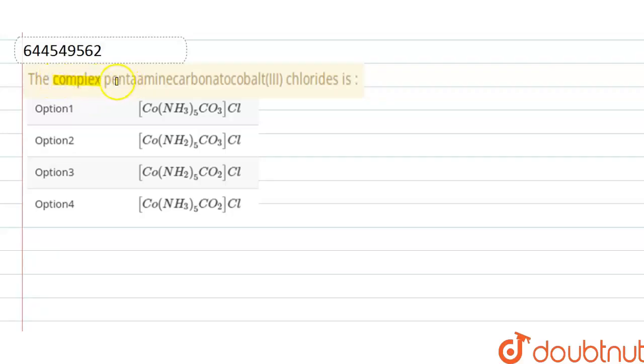The complex pentamine carbonato cobalt chloride. So first of all, the central metal ion here is cobalt, and we have ligands amine and carbonato. As there are five amine ligands because penta is five, carbonato as carbonate, and out of the complex we have chloride.